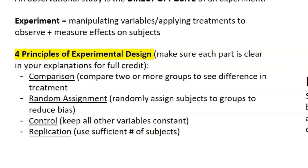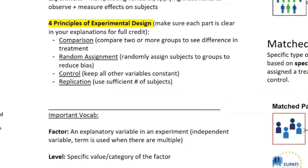The four principles are: Comparison — compare two or more groups to see the difference in the treatment; Random Assignment — randomly assign subjects to groups to reduce bias, or randomly assign treatments; Control — keep all variables constant; and Replication — make sure you have enough subjects, so don't just run an experiment with two people, use a sufficient, respectable amount.